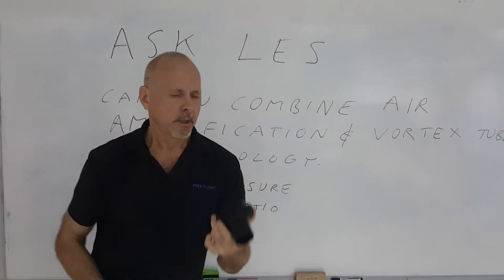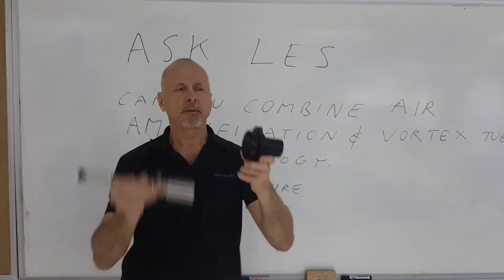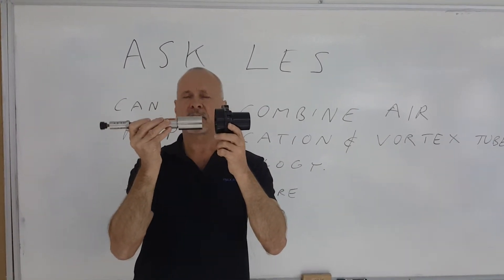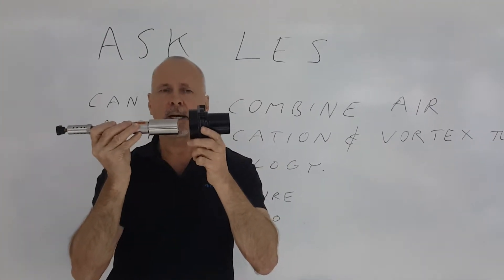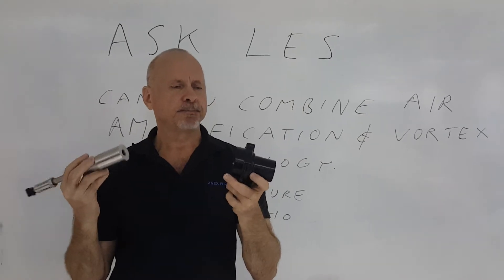So what about putting a vortex tube with the cold air coming out behind an air amplifier, so that cold air is drawn in from behind? Well, the problem with this is that with an air amplifier, you're drawing in a lot of volume.